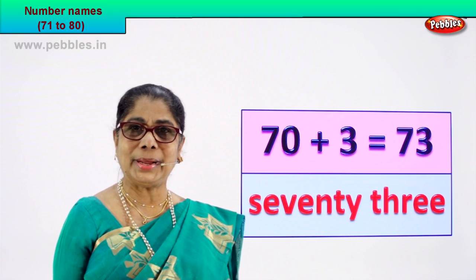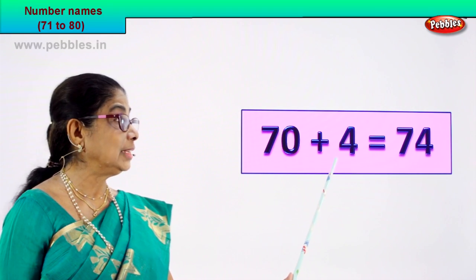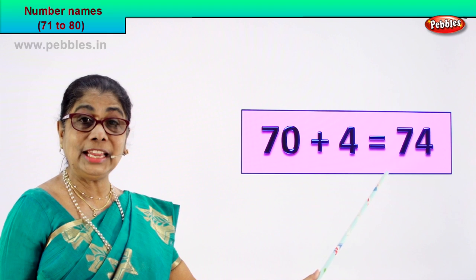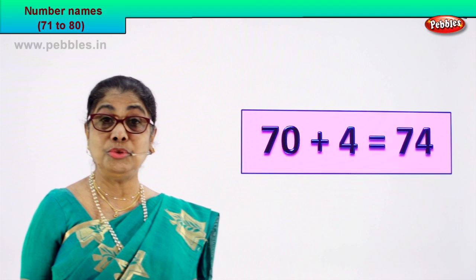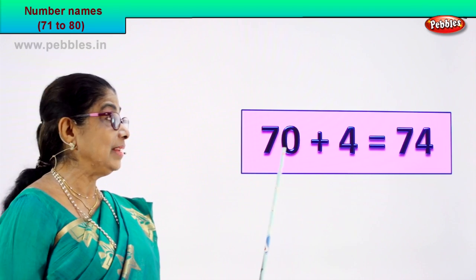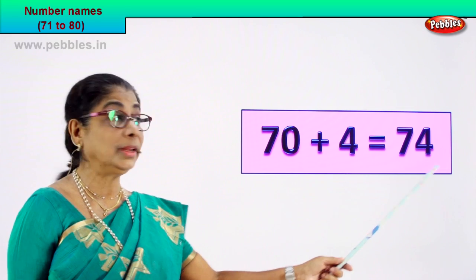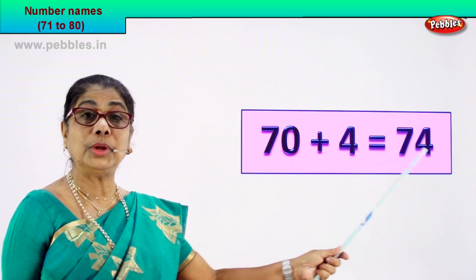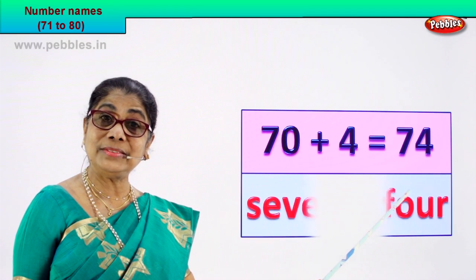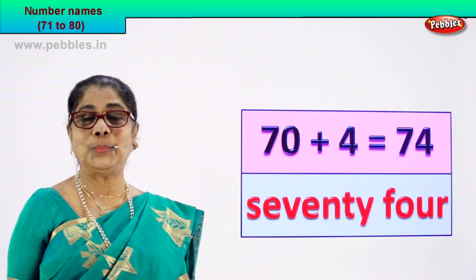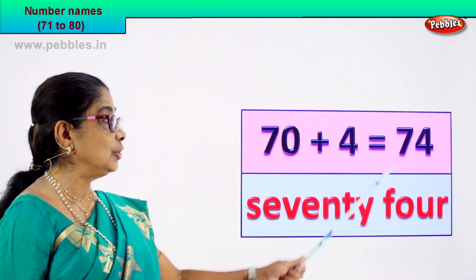Shall we go to our next number? 70 plus 4 is equal to 74. 7 and 4 — 74 is the numeral we get. 70 plus 4 is equal to 74. Now we are going to write the spelling of this numeral. You know how to spell 70, you know how to spell 4, so how do we write the name of this numeral 74?